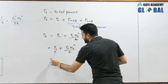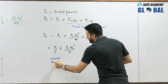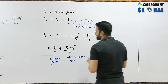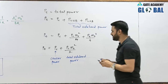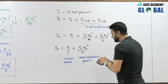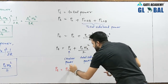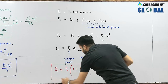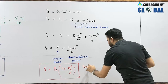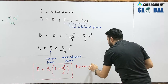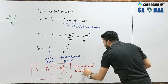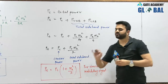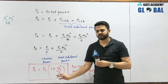The total transmitted power PT is the sum of carrier power plus total sideband power: PT = PC + PC·MA²/2 = PC(1 + MA²/2). This formula is only valid for a single-tone sinusoidal modulating signal.